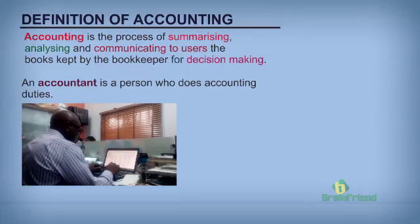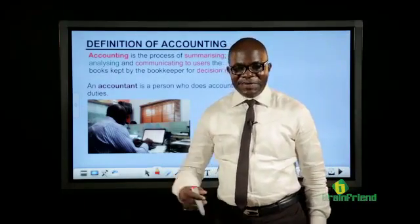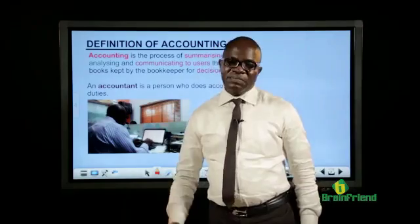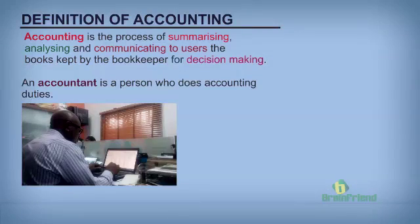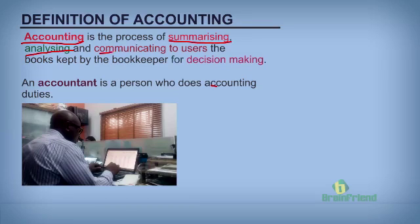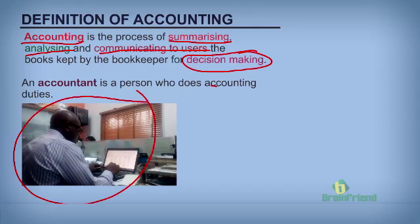We already looked at what bookkeeping is. Now I want to look at what accounting is. The bookkeeper keeps the record — the record that shows financial transactions. But after keeping the record, these records need to be summarized, analyzed, and communicated to some class of persons who need to use this information. Accounting is the process of summarizing, analyzing, and communicating to users the books kept by bookkeepers for decision-making. An accountant is a person who does the accounting duties.